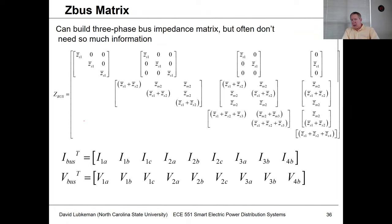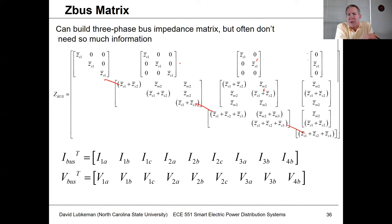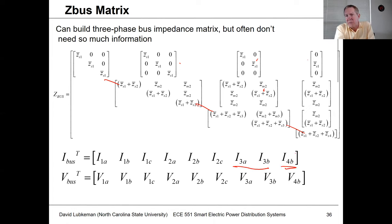If you wanted to build this into a Z-bus and draw it out, you certainly could, but you usually don't need to for practical problems. If you do a trace from the bus all the way to the source, the diagonal terms simply have the summation of the impedances, and the off-diagonal terms are the common impedances between two different buses. We also have to differentiate between buses and nodes because not every bus is going to have three phases — at bus three I just have phases A and B, and at bus four I just have phase B.